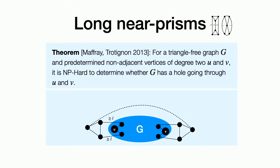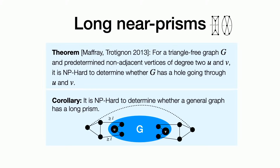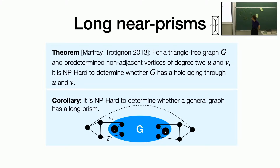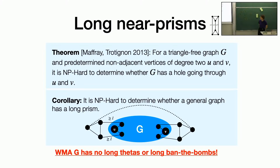That means it's NP-hard to determine whether a general graph has a long prism by this reduction: if you could tell whether the bigger graph has a long prism, then U and V must be in some cycle together in G, and then you could solve the NP-hard problem. But luckily for us, we can assume G doesn't have any long thetas or long ban-the-bombs, so we're not working with a general graph. The important thing is that G doesn't have any long thetas. We use the fact that it doesn't have any long ban-the-bombs, but I believe our algorithm still works without that assumption — it just makes the running time blow up to about n^{108L+something}.